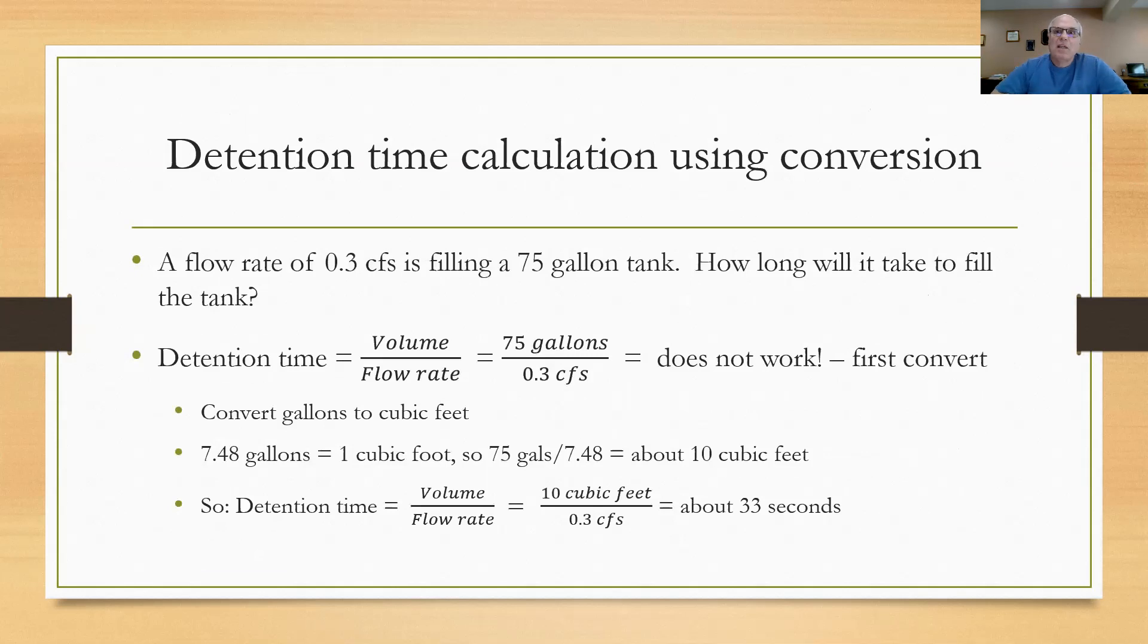Here's a detention time calculation using conversions. They tell you a flow rate of 0.3 cubic feet per second and you're filling a 75 gallon tank. How long is it going to take to fill the tank? Well, we set up our detention time volume divided by the flow rate. So we put 75 gallons, which is the volume in the numerator. In the denominator, we divide by 0.3 cubic feet per second. And that is not going to work. You can't divide gallons by cubic feet per second. So you have to convert something. And what I've chosen to do here is to convert the gallons to cubic feet.